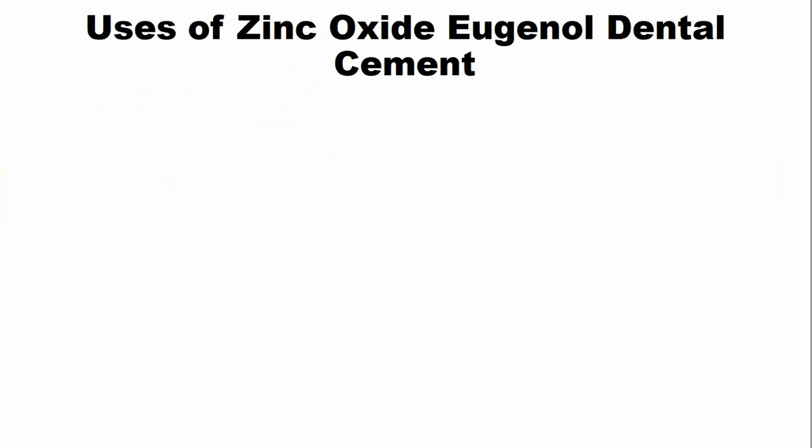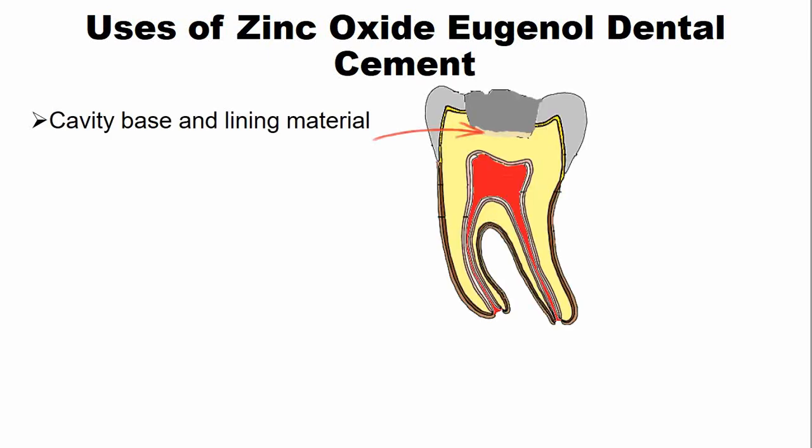The clinical applications of zinc oxide eugenol dental cement include its use as a cavity base and lining material, especially under metallic restorations such as dental amalgam, where it prevents thermal conduction or heat transfer to the dental pulp.